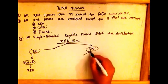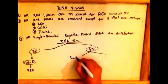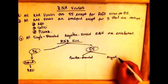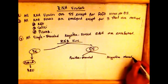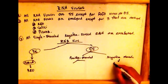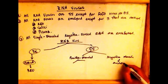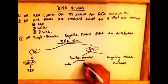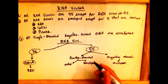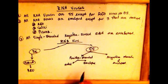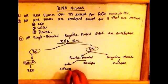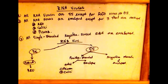Single-stranded RNA viruses are either positive sense or negative sense. In the positive sense category, they can be either naked or enveloped. All of the negative sense ones are enveloped. The single-stranded positive sense RNA viruses that are naked include the picornavirus and the calicivirus.